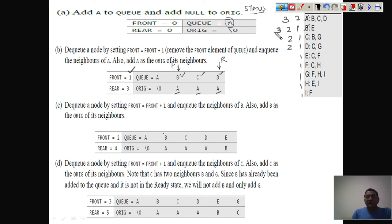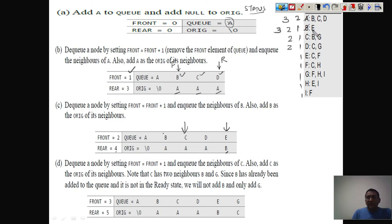Similarly, we move to the next step. We dequeue C. C's status becomes three and the front increments. We look at the neighbors of C: B and G. B is already having status three, so we do nothing with it. We can only enqueue nodes with status one. G has status one, so we enqueue G. The rear increments, and the origin of G is recorded as C.